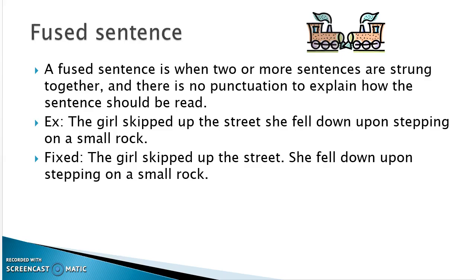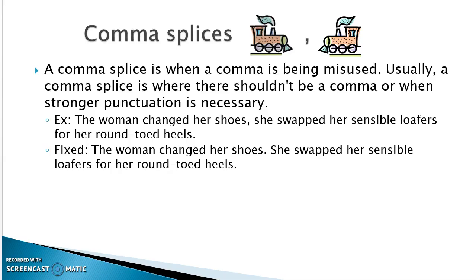The same sort of thing happens with a comma splice, except instead of no punctuation, you've put in a comma. A comma is sort of like scotch tape — it's not really strong enough to hold together two bricks. In our example: 'The woman changed her shoes, she swapped her sensible loafers for her round-toed heels.' Those are two full sentences, so the easiest fix is to put a period between them.